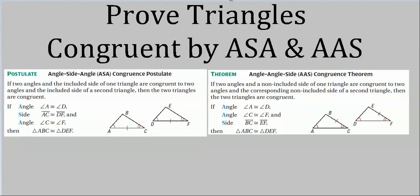Today we will learn a couple more ways to show that two triangles are congruent. First we have ASA — angle side angle. You may notice a certain similarity between this and the last one, which was side angle side.